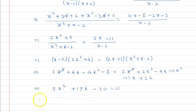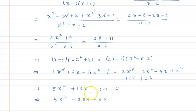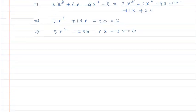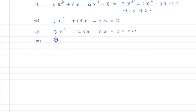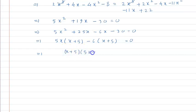The quadratic equation is now ready. We need to factorize it by splitting the middle term. We have 5x squared as it is, and we split the middle term into plus 25x and minus 6x, because their product gives 150. This gives minus 30 equal to 0. Taking 5x common from the first two terms gives x plus 5, and taking minus 6 common gives x plus 5. So we have x plus 5, times 5x minus 6, equal to 0.